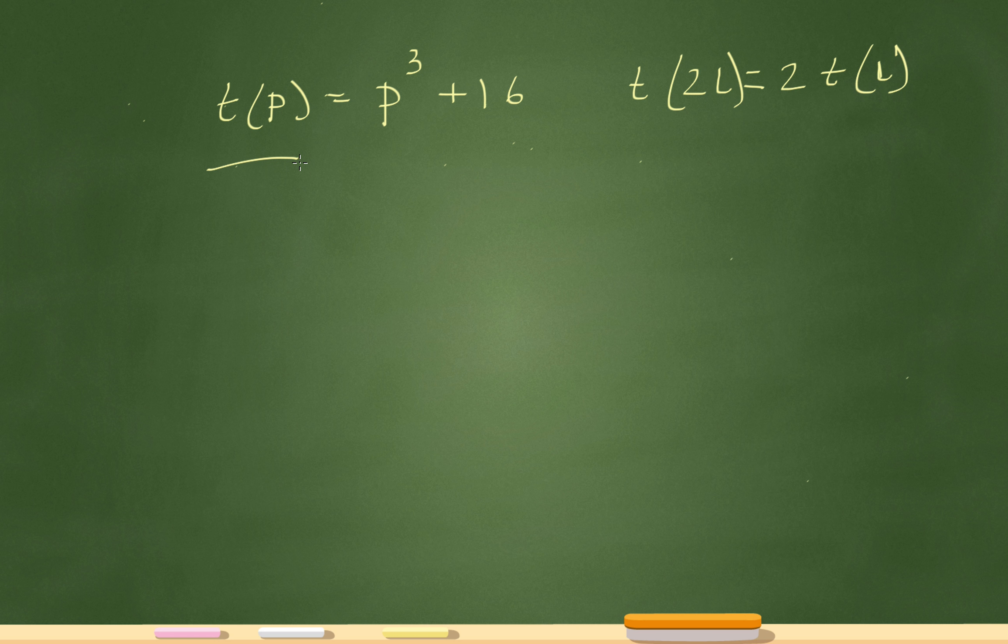The function here is t of p equals p cubed plus 16. Think of p cubed plus 16 as your big main machine, and this is where everything is going to get input in. Now, the question is saying, if t of 2l equals 2 times t of l, what is the value of l?